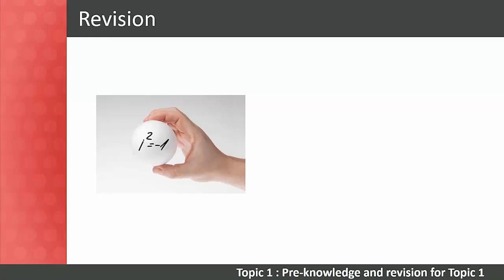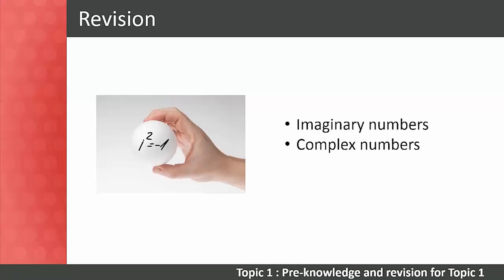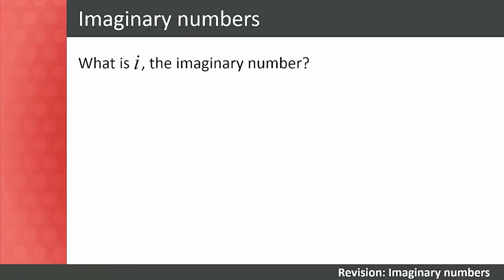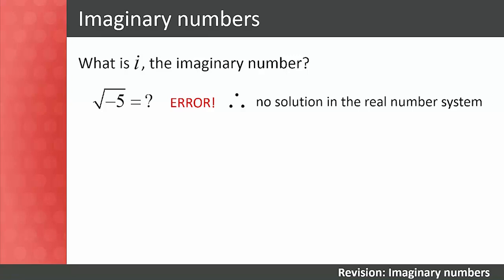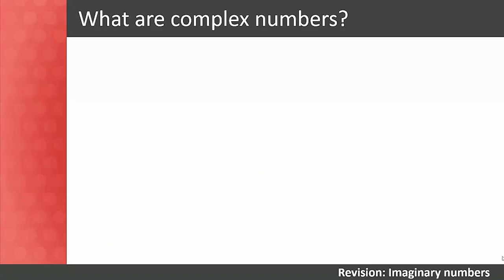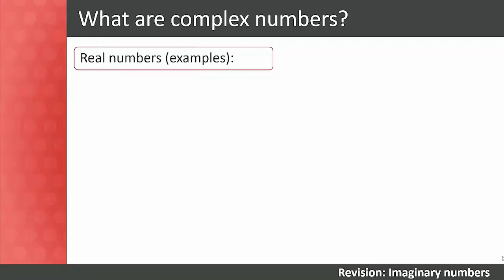For the purpose of this math support package, we'll start off by briefly revisiting imaginary numbers and complex numbers from Level 3. If we try to find the square root of a negative number on a calculator, such as the square root of negative 5, we get an error. It's not possible to find the square root of a negative number within the real number system. Mathematicians created the imaginary number i to get around this problem. i is defined as: i² = −1, and therefore i = √(−1) or i = −√(−1), giving positive i or negative i.